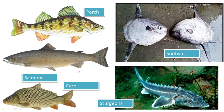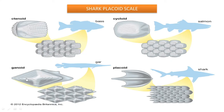Another type is called the ganoid scale. It has a diamond-like appearance. One interesting thing about this type of scale is that its pattern of arrangement is not overlapping; instead, it is arranged just like a jigsaw puzzle.